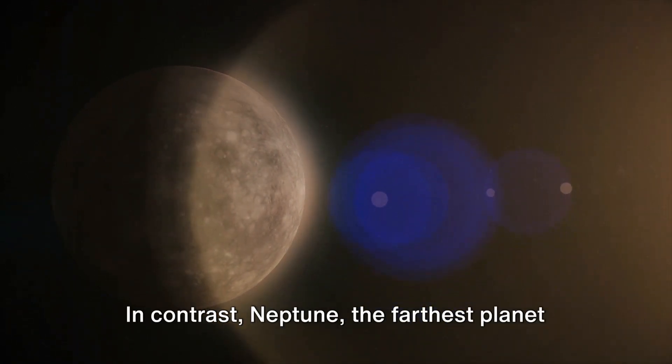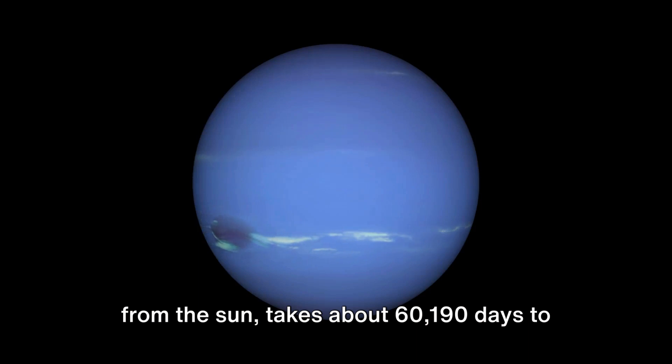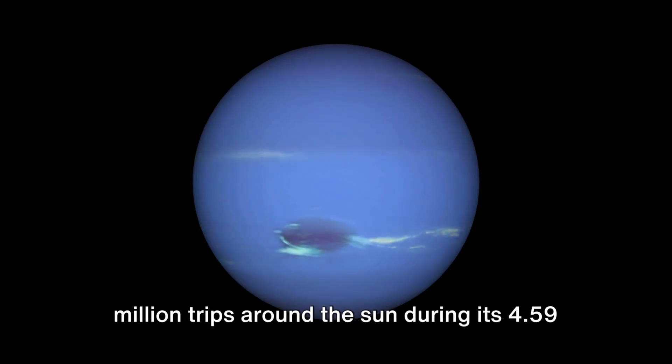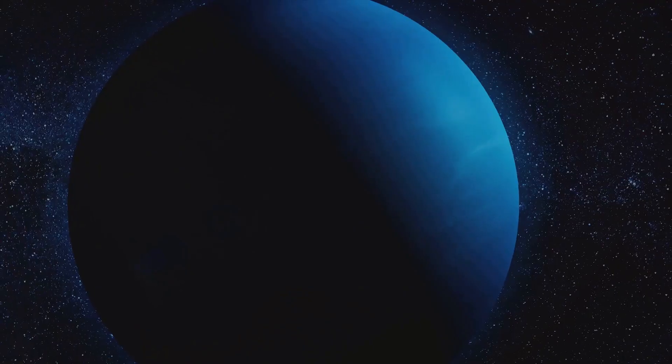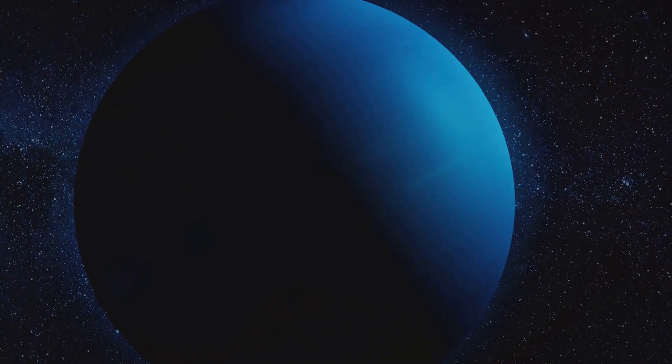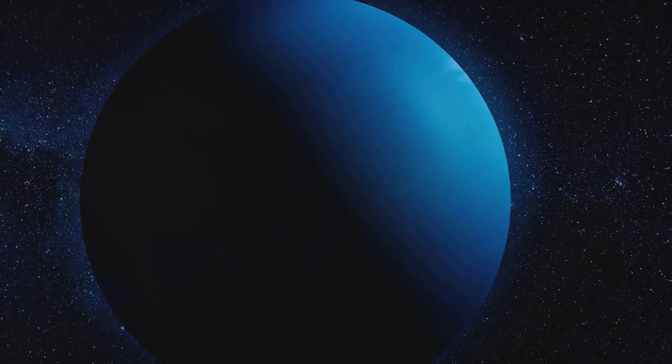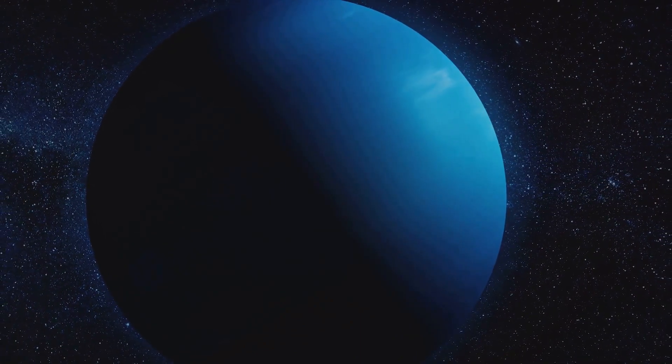In contrast, Neptune, the farthest planet from the sun takes about 60,190 days, or 164.7 years, to complete an orbit, managing only around 27.9 million trips around the sun during its 4.59 billion years of existence.